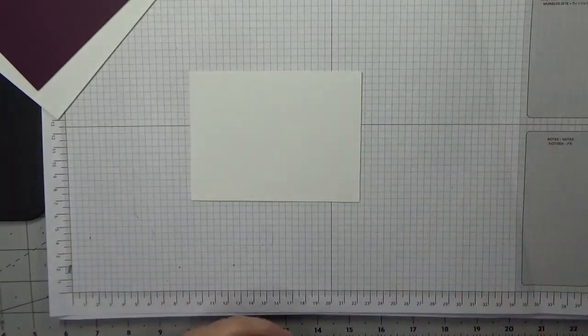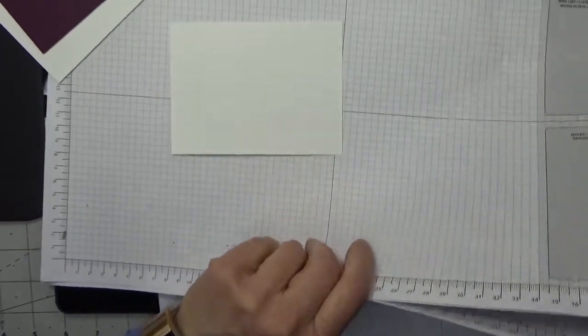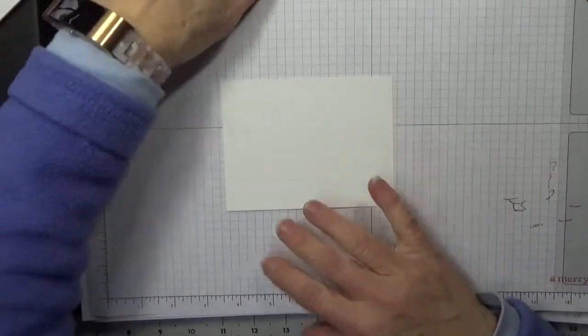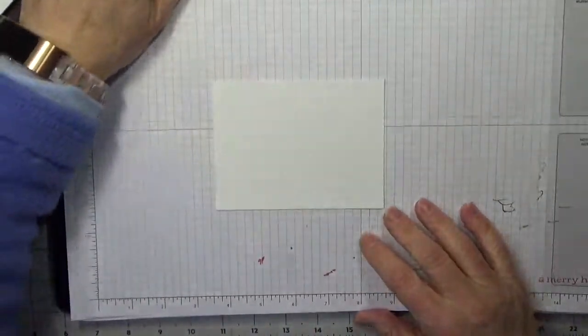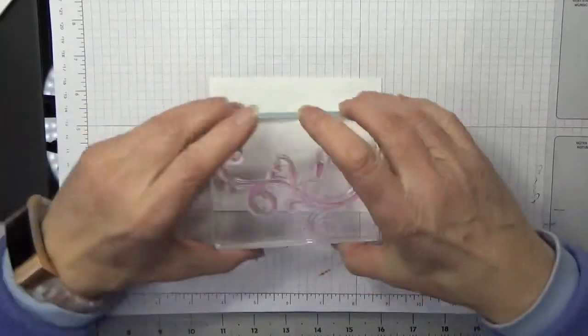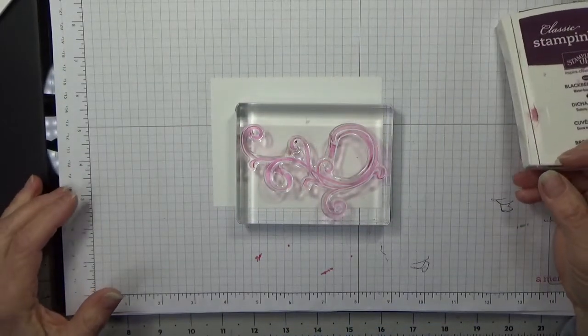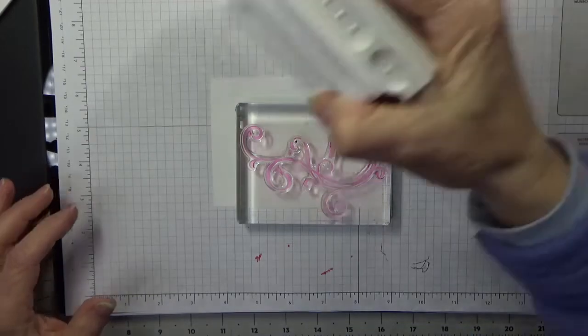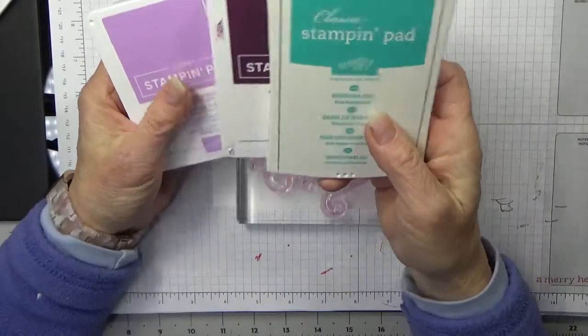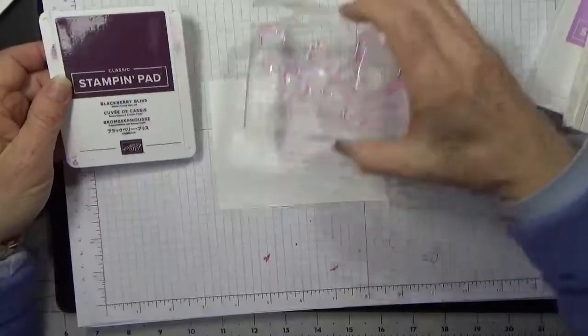I'm going to be stamping off the sides of my card front. We're going to use this big swirl stamp and some Blackberry Bliss ink. The three colors of ink we're going to use today are Blackberry Bliss, Bermuda Bay, and Fresh Freesia. So we'll start out with our Blackberry Bliss.